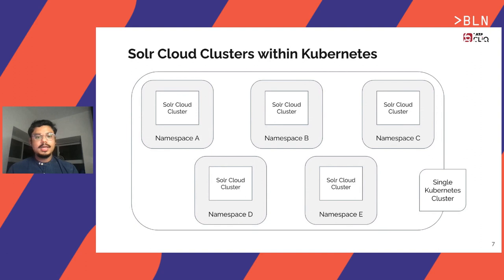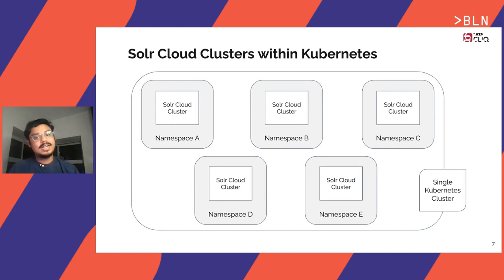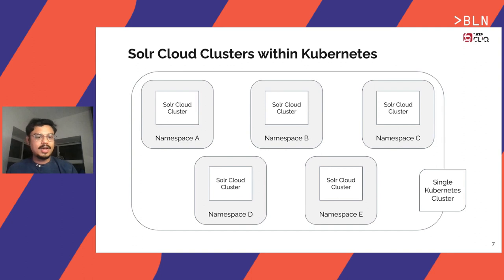We can deploy multiple Solr Cloud clusters within a single Kubernetes cluster. All the resources — configuration, pods, services, persistent volumes definitions — can be isolated from one another via different namespaces. Resources in different namespaces can still talk to each other via a definite discovery mechanism if there is a requirement.